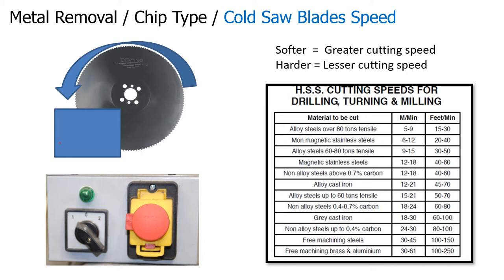Blade type is important but so is cutting speed. On the cold saw control I only have two speeds: fast and slow. Referring to the surface speed chart, if I was cutting aluminium I would set the machine to fast; if cutting steel, I would set it to slow. For example, my RPM conversion chart tells me that for a 300mm diameter blade, I need to rotate at 9 RPM for alloy steels, but 47 RPM for free machining steels. We will look at conversion formulas for surface speed to RPM in more detail in the turning and milling unit.